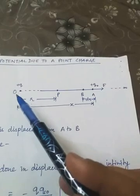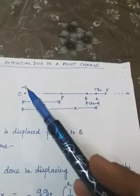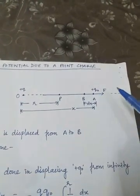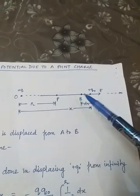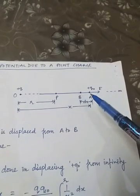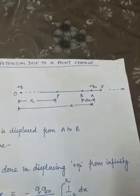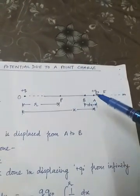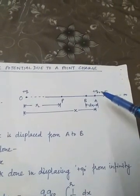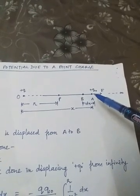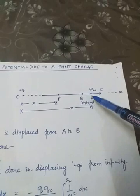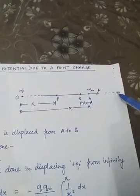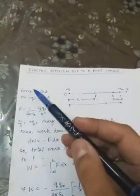In our derivation, we take a positive charge plus Q kept at point O. Due to this charge, some electric field is produced at P, and therefore some electric potential should also be produced. The path from infinity to point P is divided into smaller parts. One point is A and another is B; the position of A from O is at distance x, and the distance between A and B is dx. We will first determine the force exerted on plus Q naught at A, then the work done in carrying plus Q naught from A to B, and then integrate for the complete path from infinity to point P.